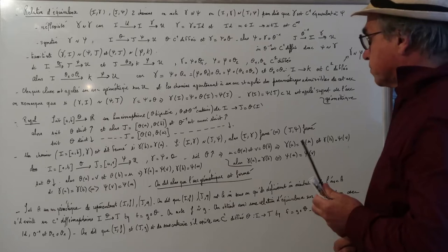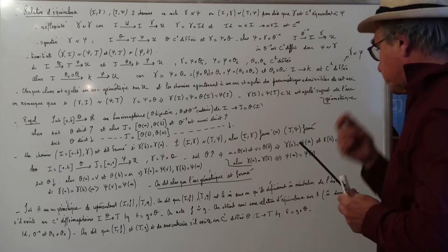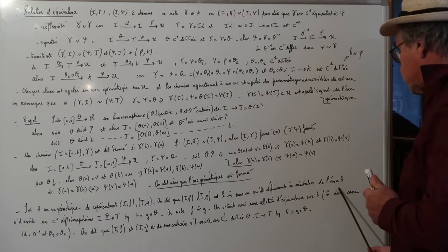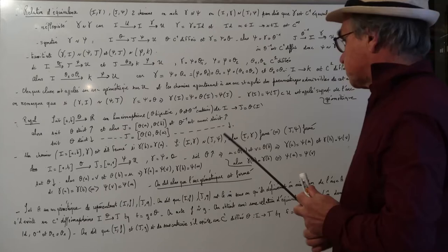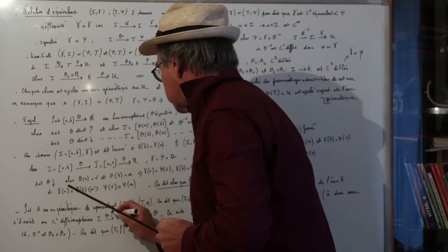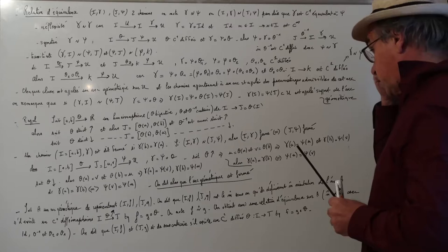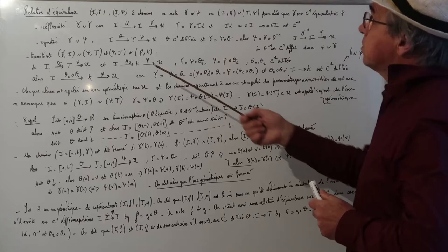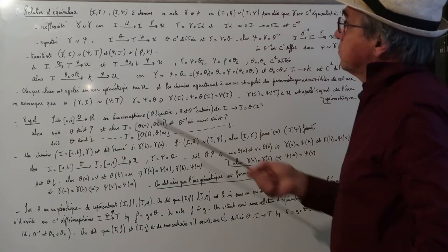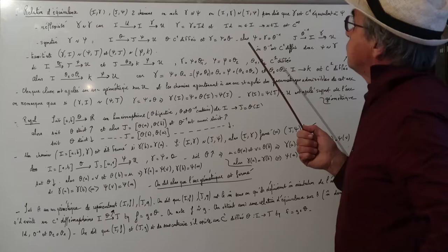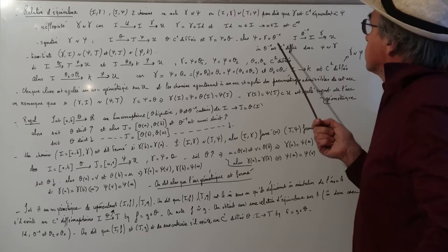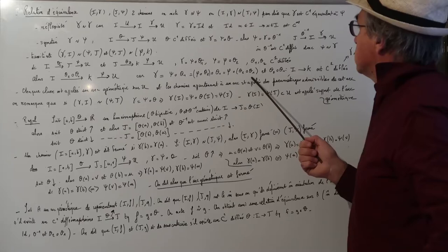Soit A un arc géométrique de représentants If et Jg. On dit qu'ils ont le même sens, qu'ils définissent la même orientation, s'il existe un C1-difféomorphisme strictement croissant de I vers J tel que f est égale à g rond θ. On obtient une relation d'équivalence sur A : la réflexivité avec l'identité qui est strictement croissante, la symétrie parce que si θ est strictement croissant alors θ⁻¹ est aussi strictement croissant, et la transitivité car θ₂ rond θ₁ est strictement croissant si θ₁ et θ₂ le sont.